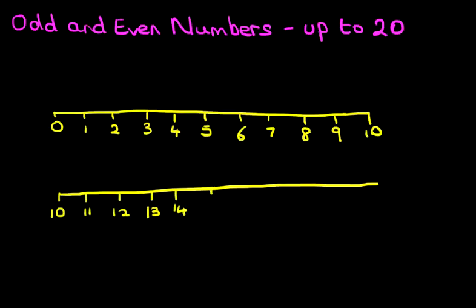13, 14, 15, 16, 17, 18, 19, and the last one is 20. So those are our two number lines.